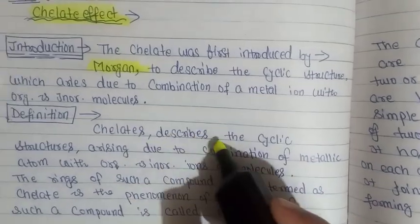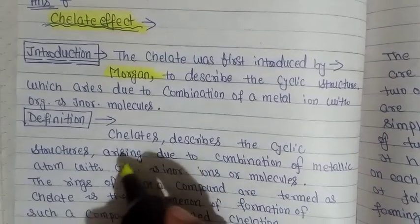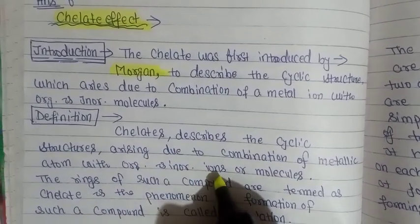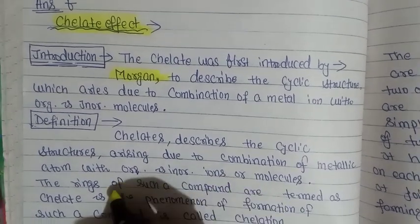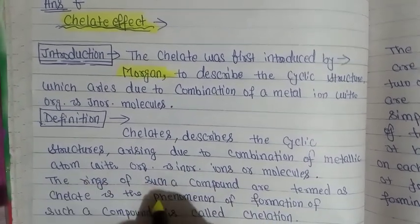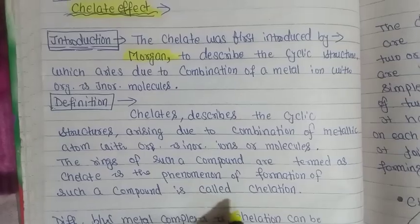Chelate describes the cyclic structure arising due to combination of metallic atom with organic and inorganic ions or molecules. The rings of such compounds are termed as chelates and the linear formation is called chelation.